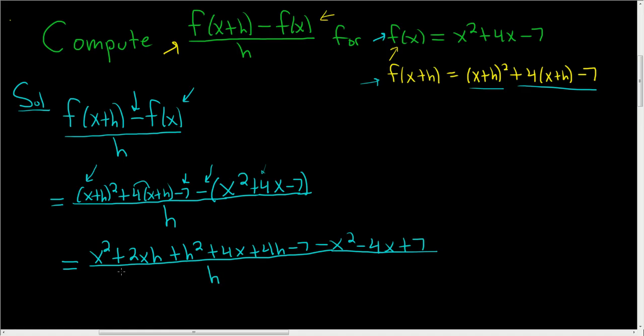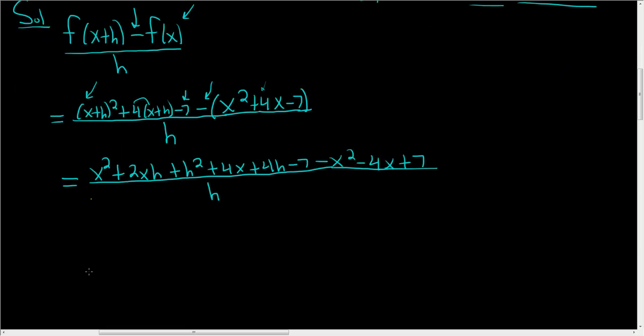Now, in the next step, anything that doesn't have an h is going to cancel. So let's see if that's actually true. It should be. If it's not, that means we messed up. So here we have x squared. Does it go away? Yes, it does.